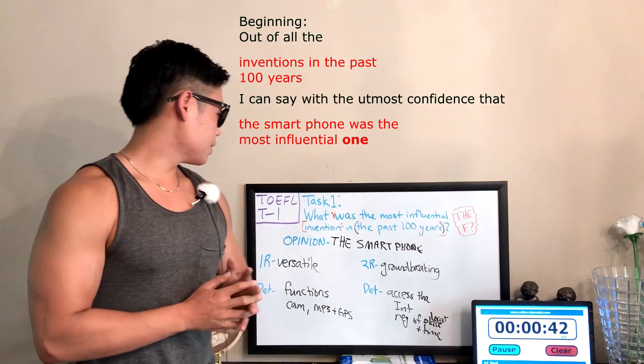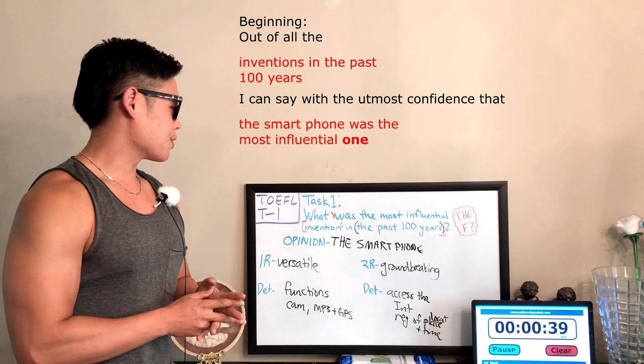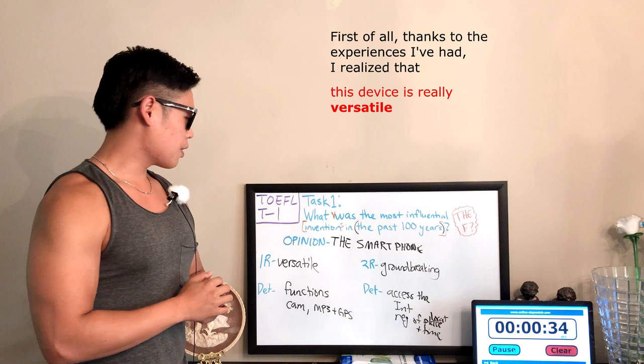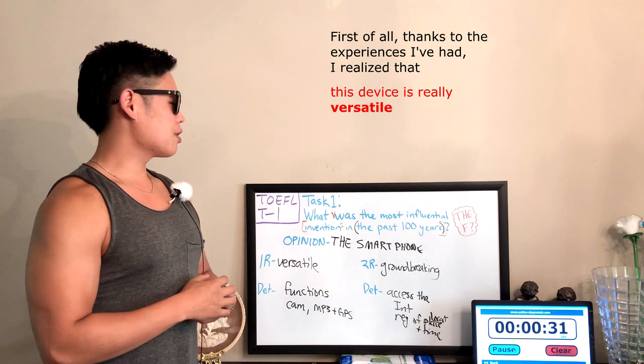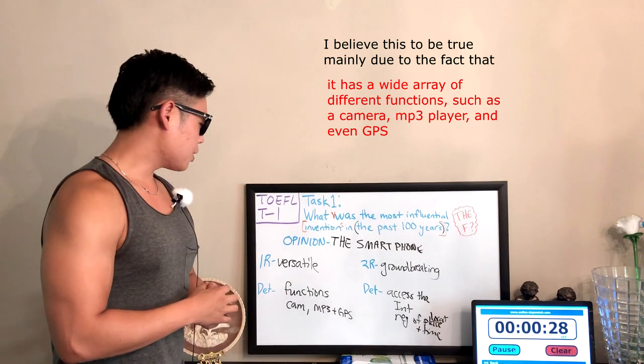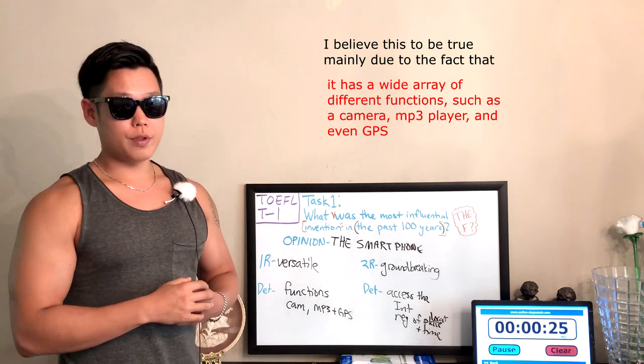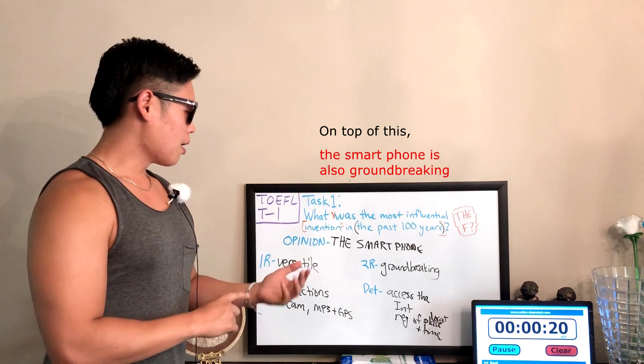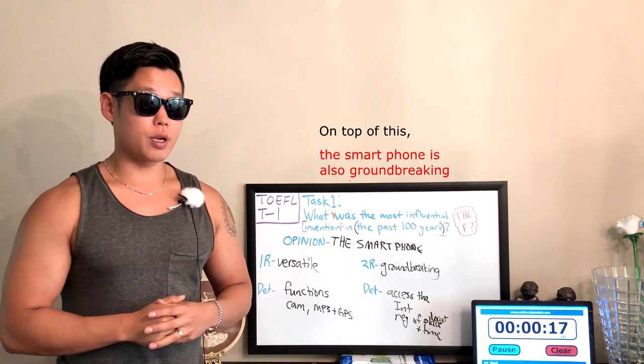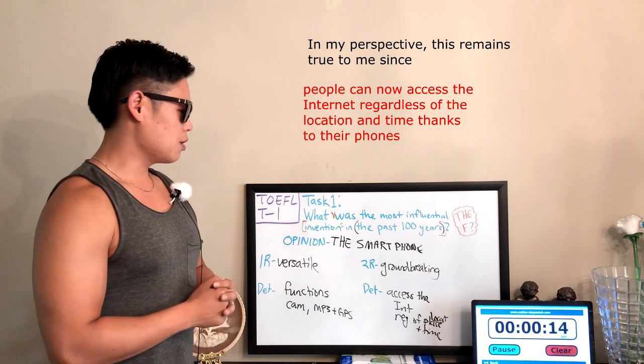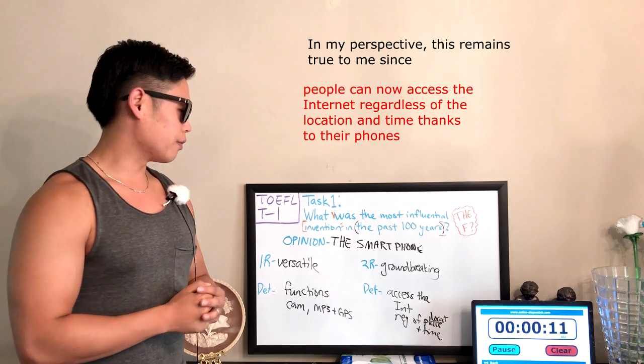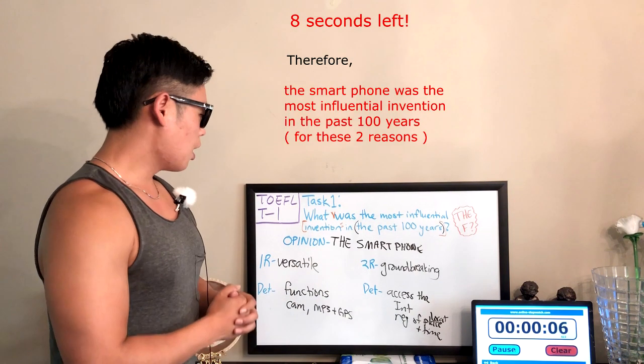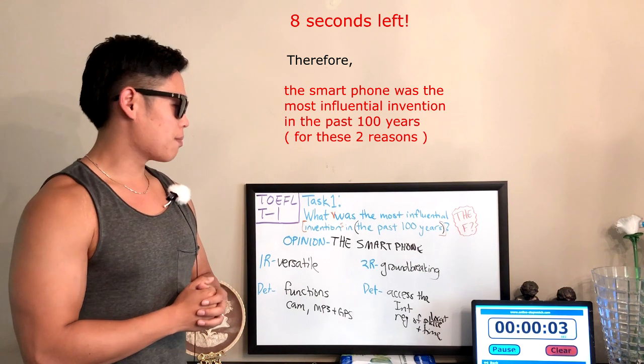Out of all the inventions in the past 100 years, I can say with the utmost confidence that the smartphone was the most influential one. First of all, thanks to the experiences I've had, I realized that this device is really versatile. I believe this to be true mainly due to the fact that it has a wide array of different functions such as a camera, MP3 player, and even GPS. On top of this, the smartphone is also groundbreaking. In my perspective, this remains true to me since people can now access the internet regardless of the location and time thanks to their phones. Therefore, the smartphone was the most influential invention in the past 100 years.